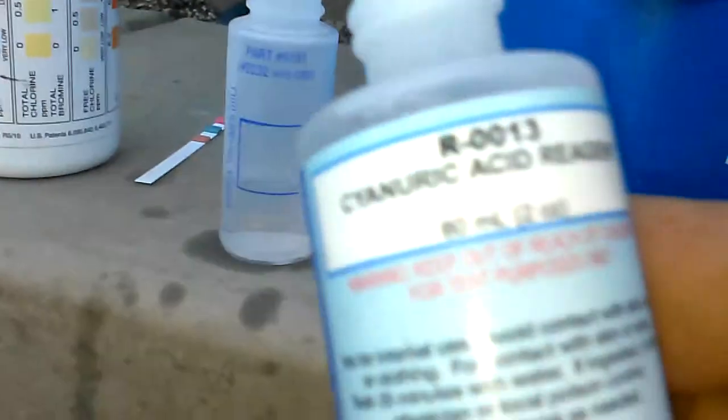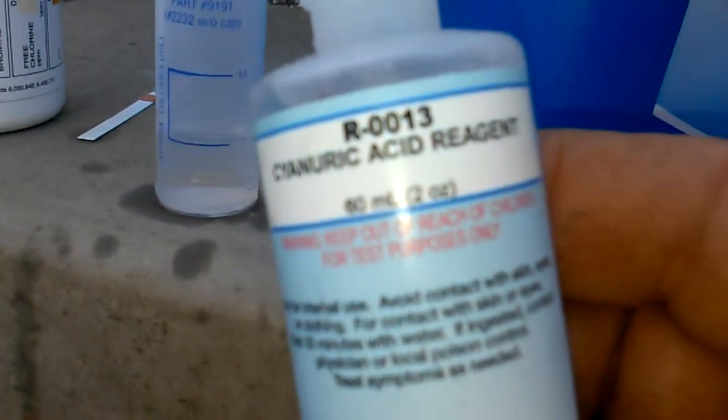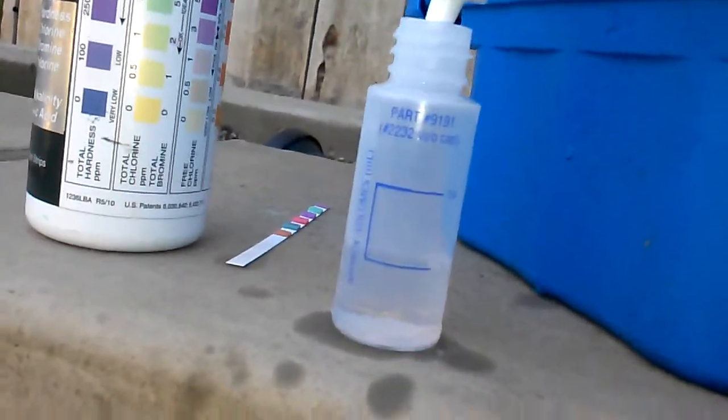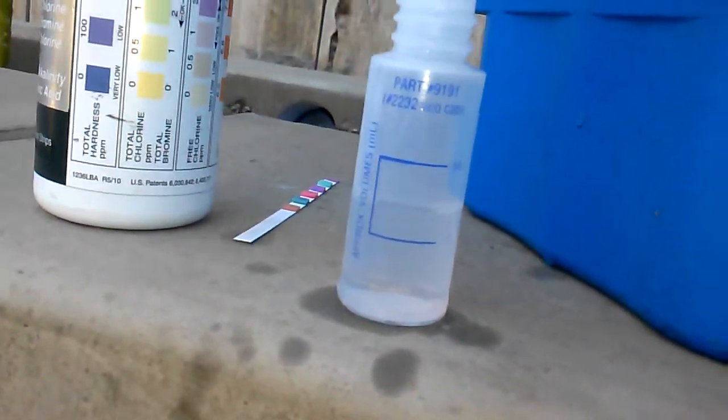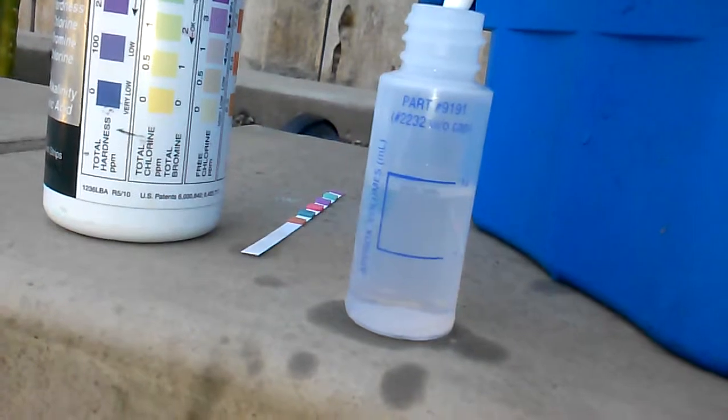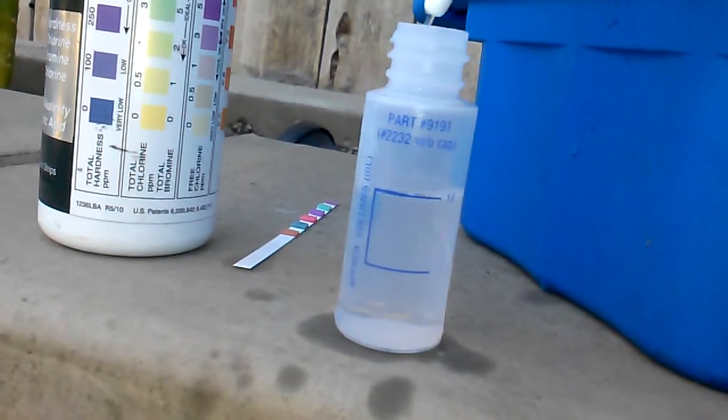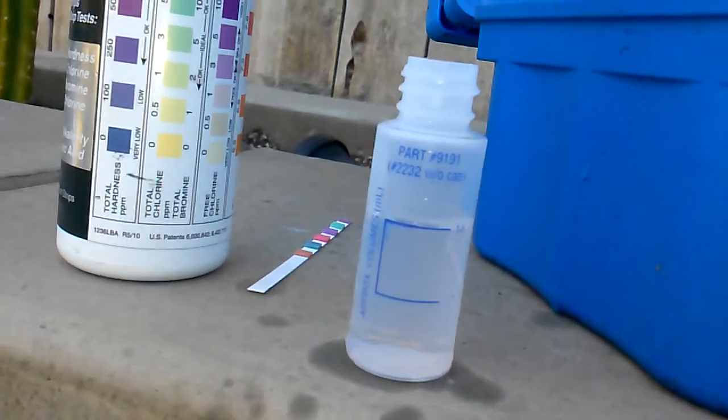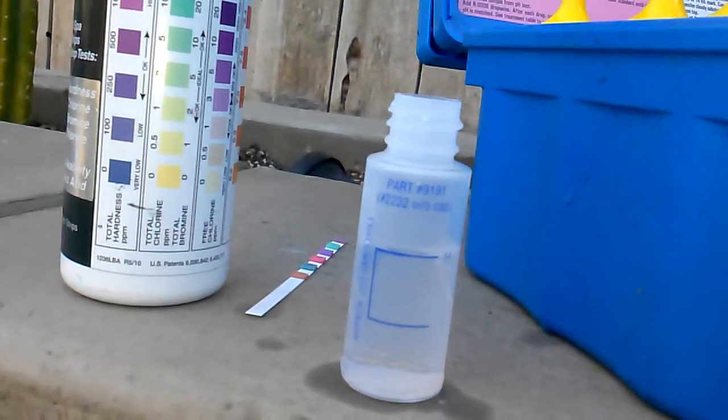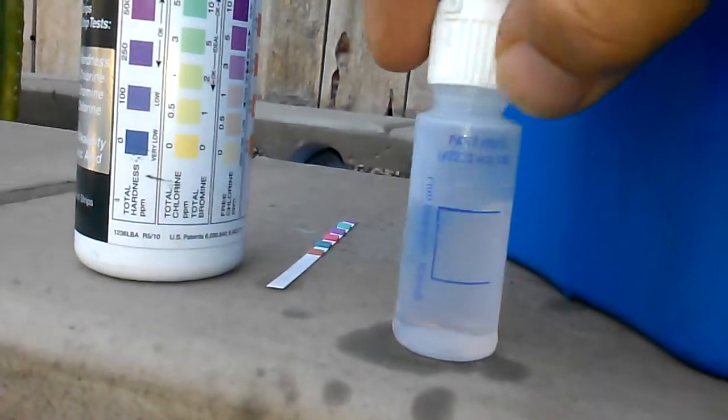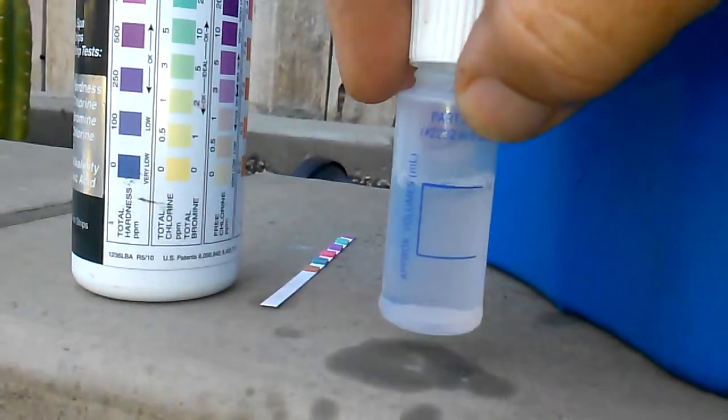And then I've got the R0013 cyanuric acid reagent. What we're going to do is we're going to fill up the vial until it's up to the next line. So basically it's half water, half the reagent.